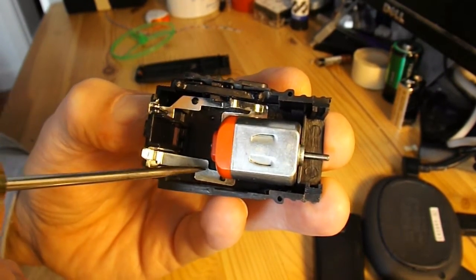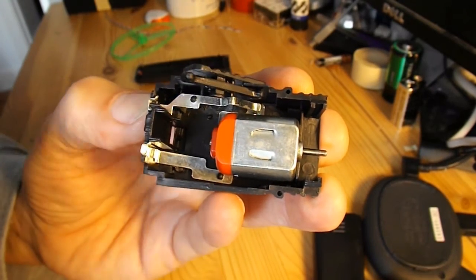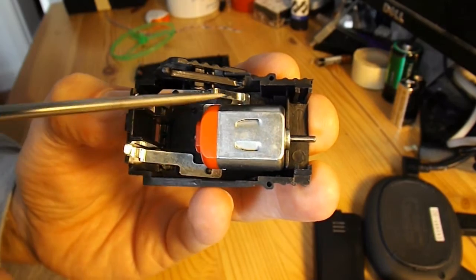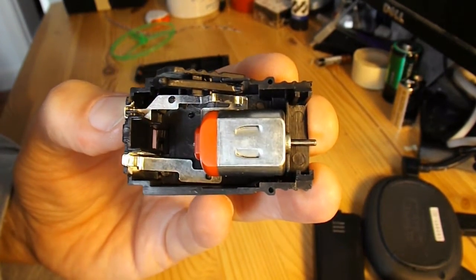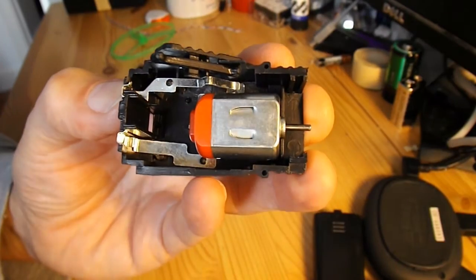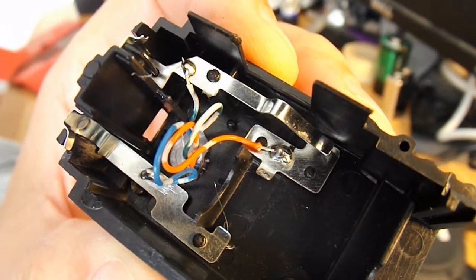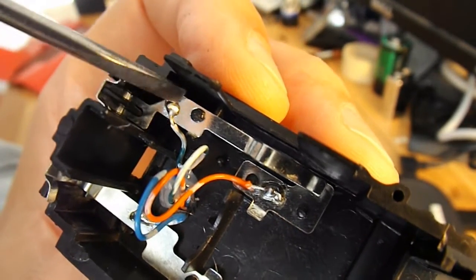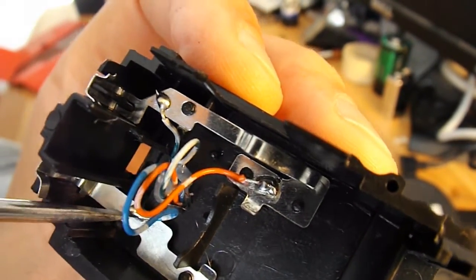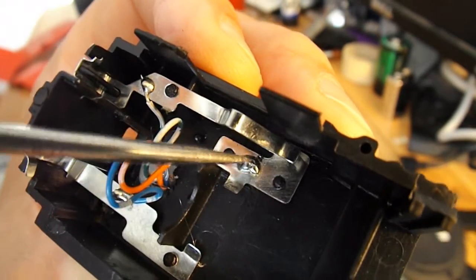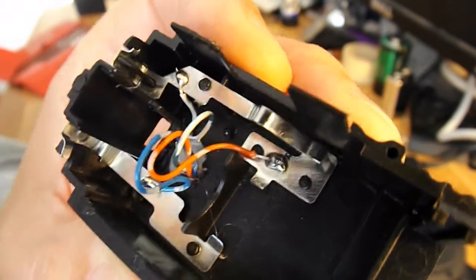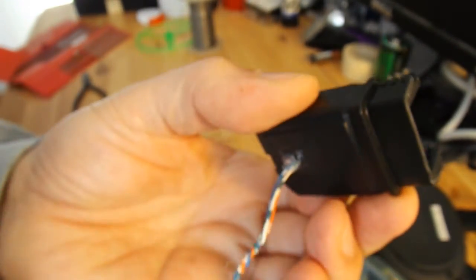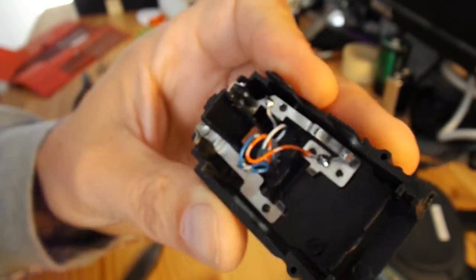One here, one here, and one there. So that's a positive and a negative, and also the other side of the switch. Right, there we are, that's the three points intercepted. Positive battery, negative battery, and the other side of the switch. Nice little lump of hot glue in there to stop the wires rocking around. I'll put it back together.